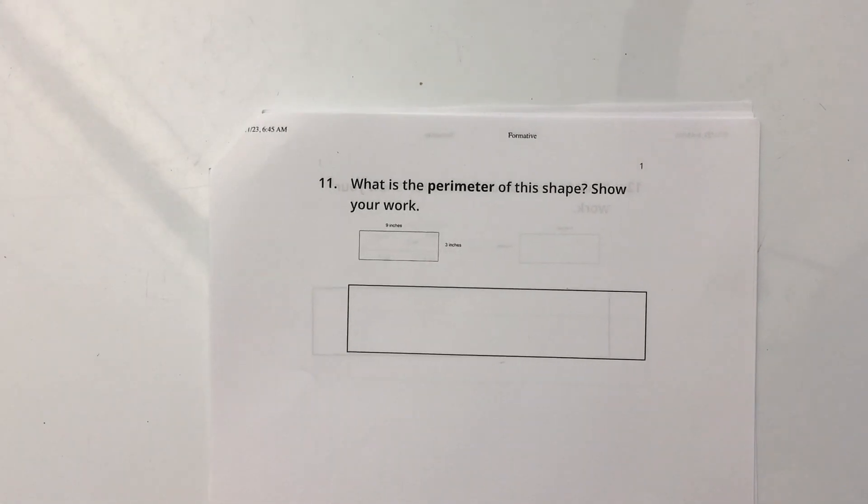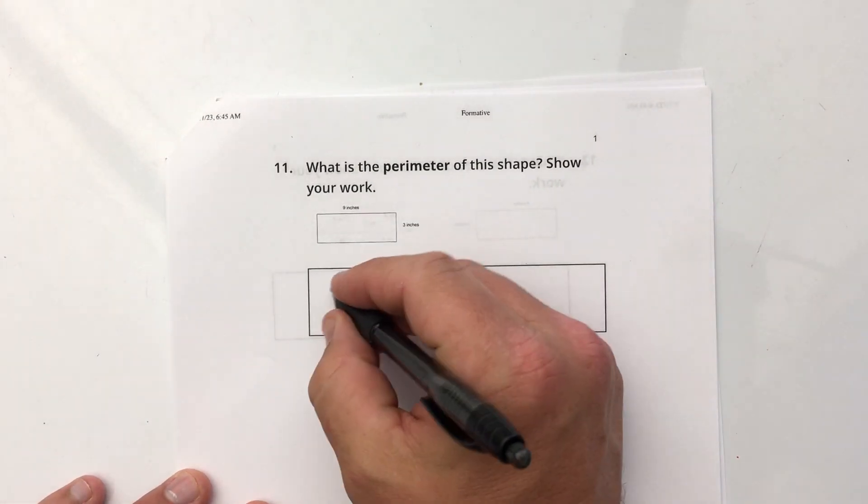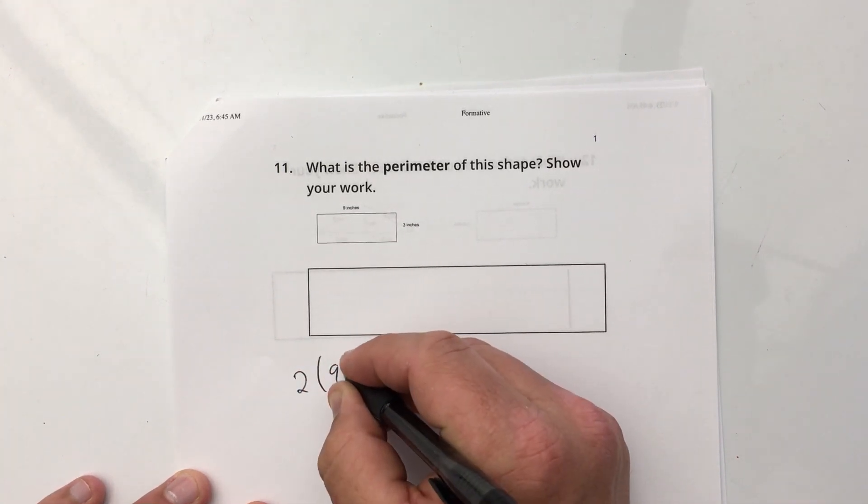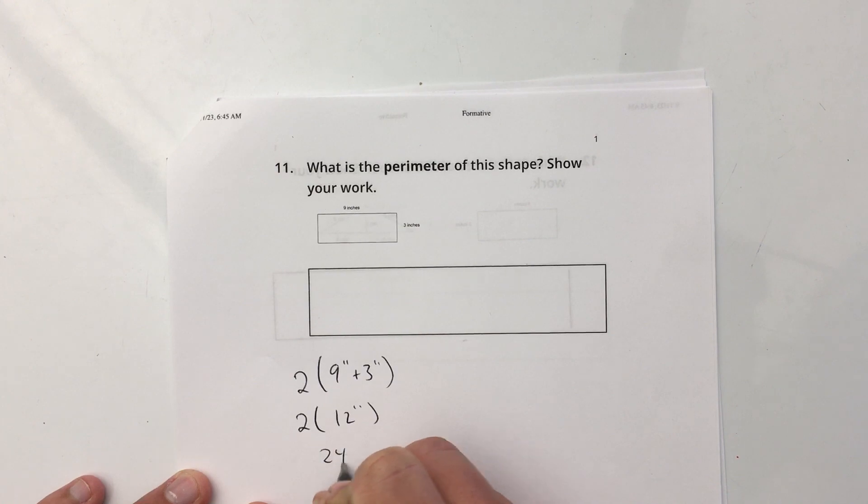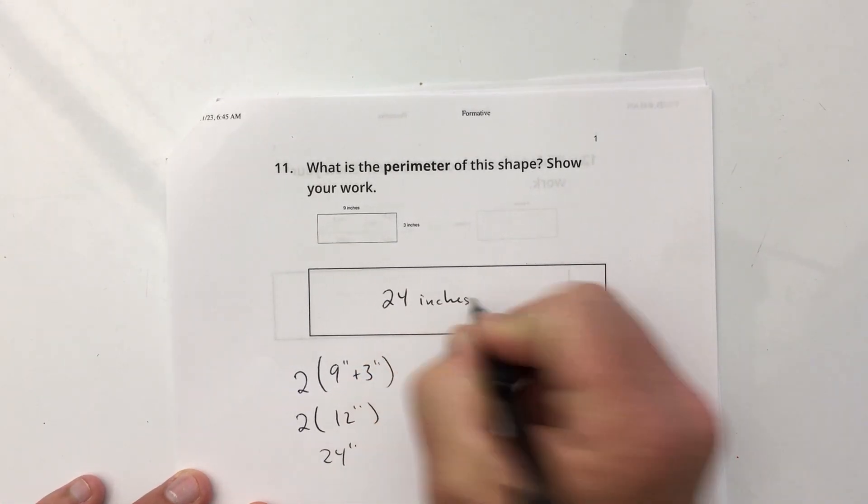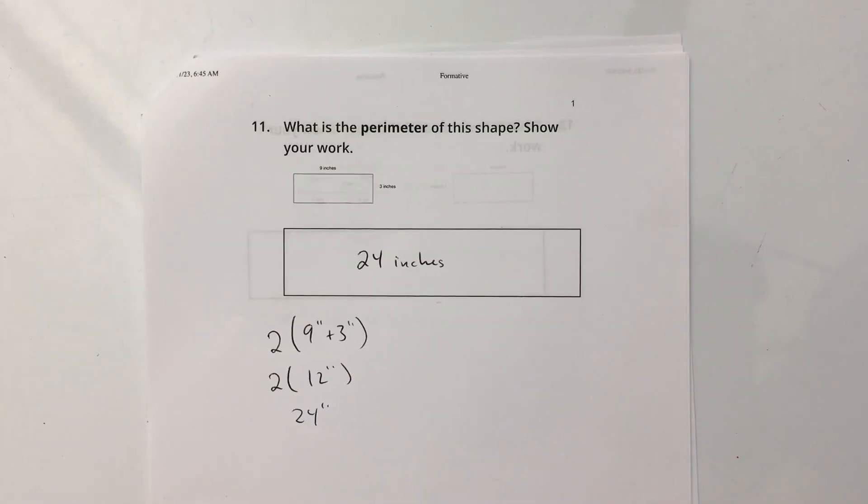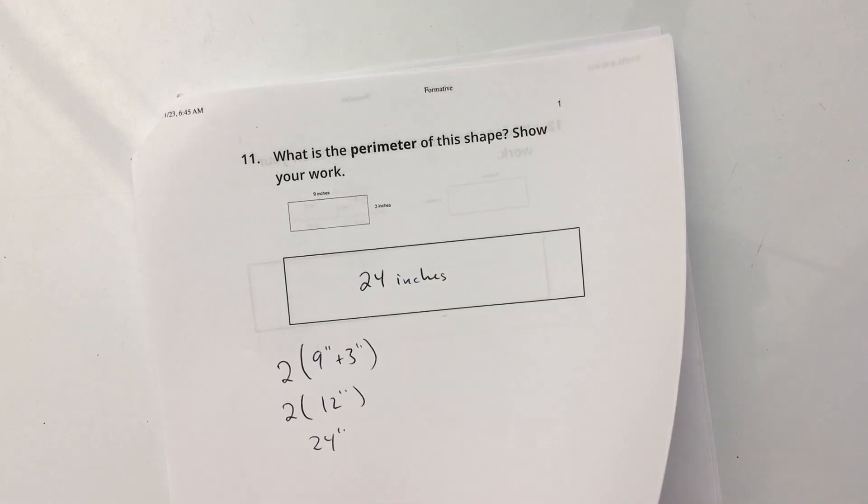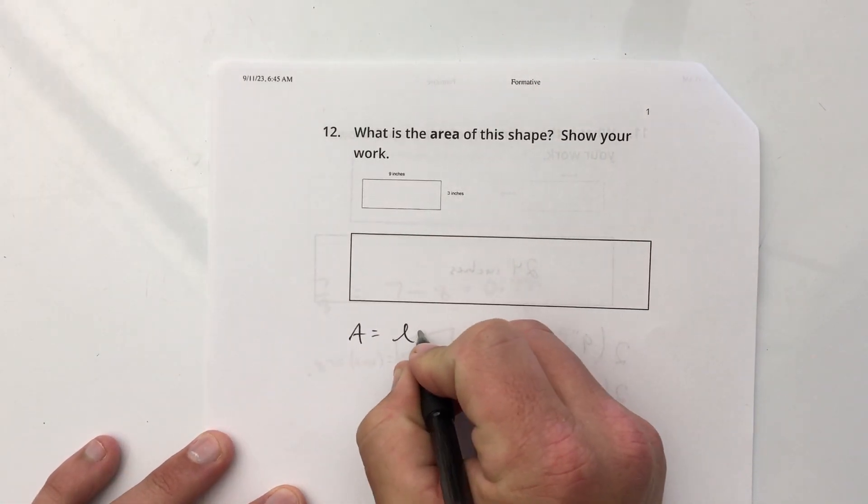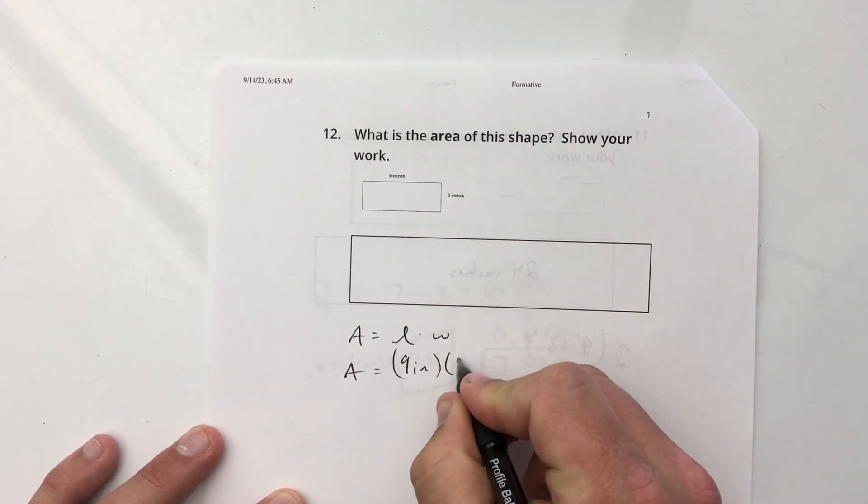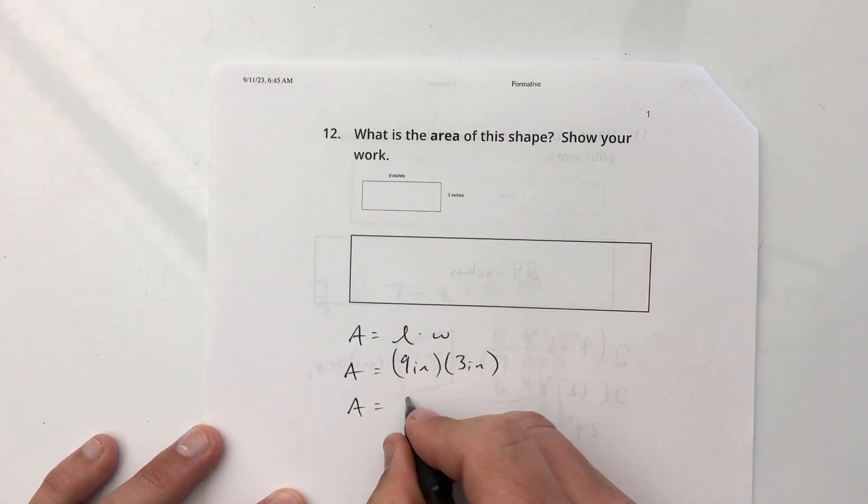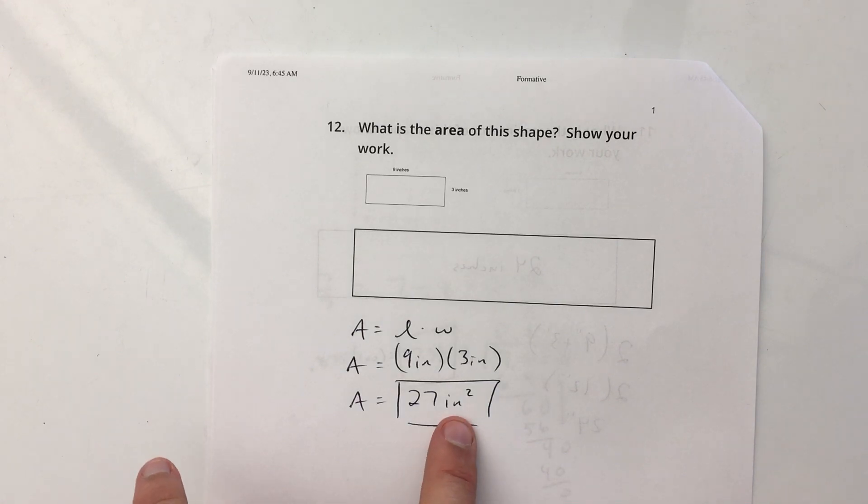Number 11. What is the perimeter of this shape? I think you can read that. It says 9 inches by 3 inches. I'm going to do 2 times 9 inches plus 3 inches, which is 2 times 12 inches, which is 24 inches. Hopefully, the perimeter is review. Area of this shape. Area is length times width of a rectangle. So my area is 9 inches times 3 inches. 9 times 3 is 27. Inches times inches is inches squared. You have to have the units correct.